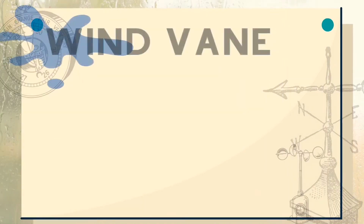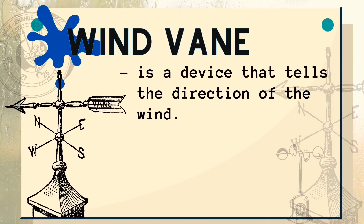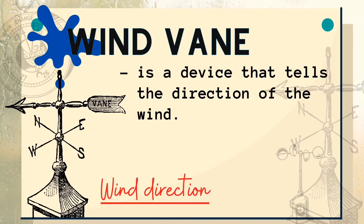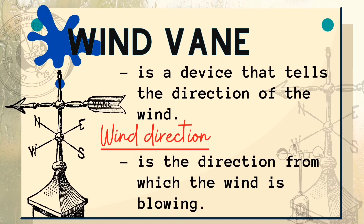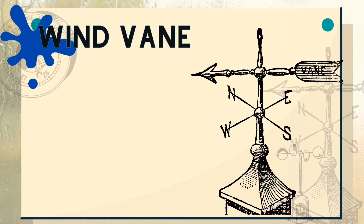Next is the wind vane. It is a device that tells the direction of the wind. The wind vane is used to measure wind direction. Wind direction is the direction from which the wind is blowing. Knowing the direction of the wind helps us predict the weather.